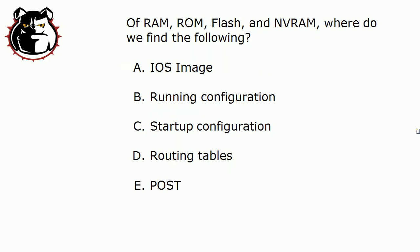Now let's take a look at today's question. Of the following, where are we going to find these five things? I'm looking at RAM, ROM, Flash, or NVRAM. Where are we going to find: A, the IOS image; B, the running configuration; C, the startup configuration; D, the routing tables; and E, something called a POST? Where are we going to find those?